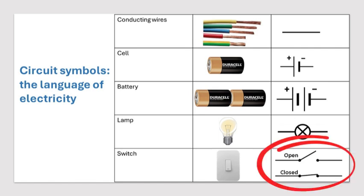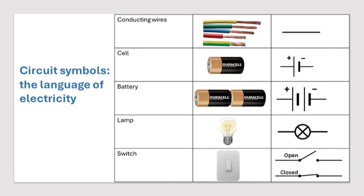On the other hand, a closed switch connects the path, allowing electricity to flow through. It's like the drawbridge is down and you can cross it now. The symbol for a closed switch is a line connecting across the break, completing the path.